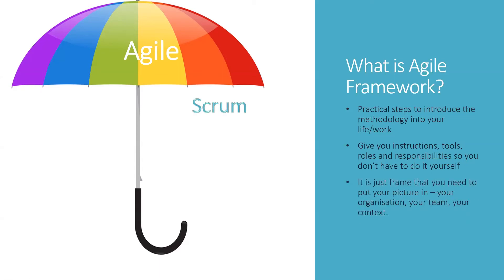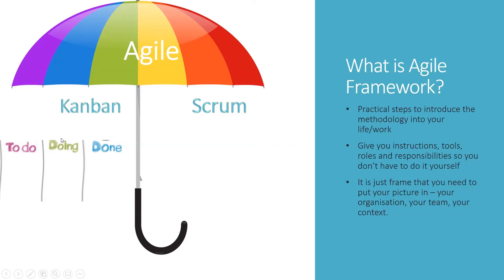The two most popular frameworks are Scrum and Kanban. They differ a lot. Kanban is all about visualization of work — I think all of you have done it at some point: you create a list of tasks to do, then start doing them, and cross them off when done. You try to move items through the flow as efficiently as possible, focusing on the most important item first and pulling items as they come through. Improving the flow is the key in Kanban, and iterations are quite quick because they focus on items that are in progress.